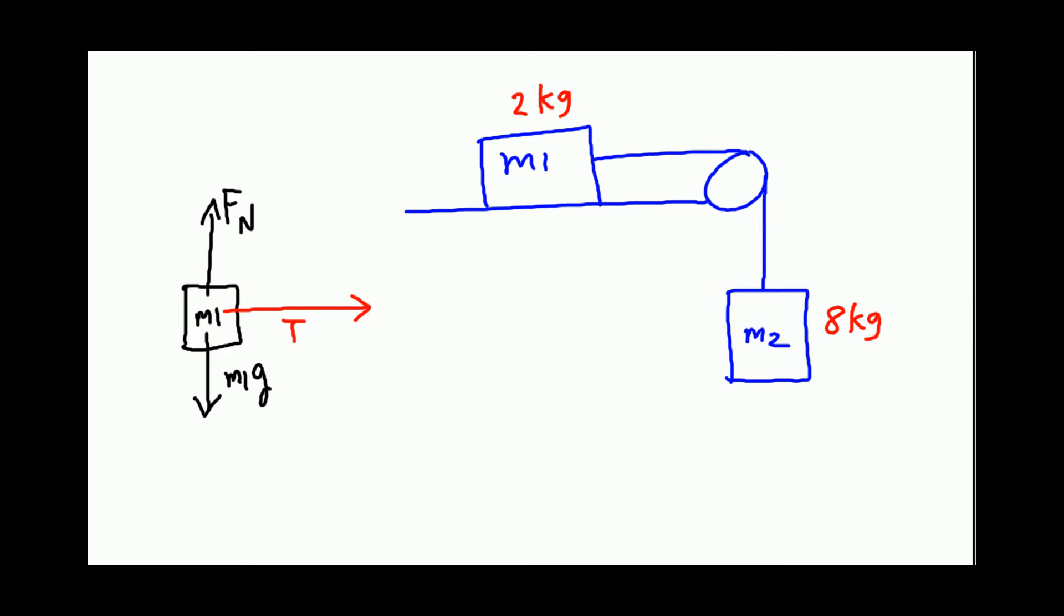It always acts away from the object. Immediately you see that net force along the vertical is zero. That doesn't give us anything. Normal force equals M1g, but what we want is net force along the horizontal. Net force along the horizontal equals M1a. So T equals M1a.